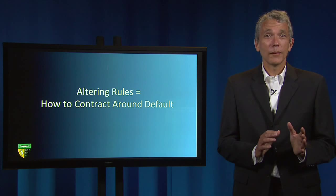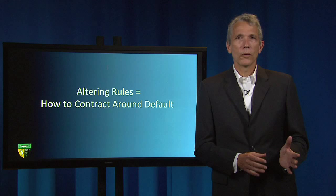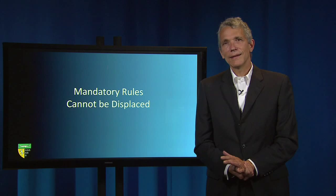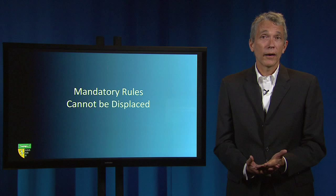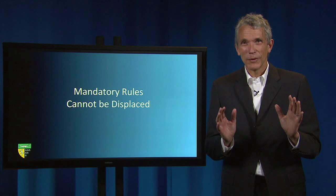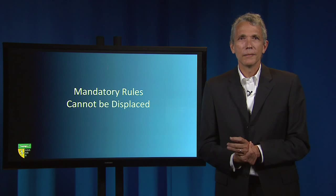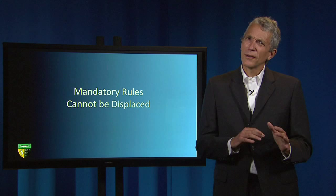Not every contract rule can be contracted around. Those that cannot be changed are termed mandatory or immutable rules. Mandatory rules are established by both courts and legislators. The common law has also established immutable limits, for example, on the maximum amount of damages that parties can contract for — these are restrictions on so-called liquidated damages — and limits on the maximum length of covenants not to compete. The duty of good faith is a mandatory part of every agreement, although standards of good faith can, within reason, be altered by agreement.